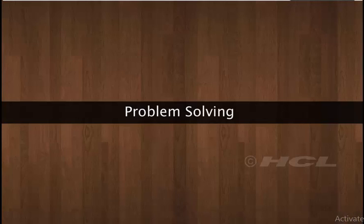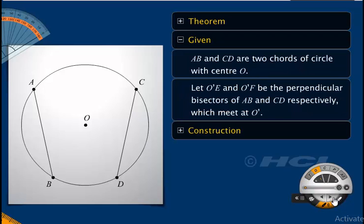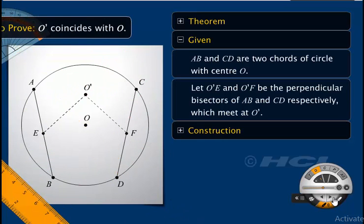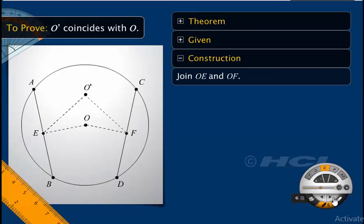Let us now see an application of the converse of the theorem. Prove that the perpendicular bisectors of two chords of a circle intersect at its center. We are given that AB and CD are two chords of a circle with center O. If possible, let us consider O' to be the point of intersection of perpendicular bisectors O'E and O'F. To prove this, we need to show that O' coincides with O. Let us join O'E and O'F, which are the perpendicular bisectors of chords AB and CD respectively.